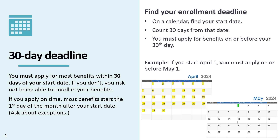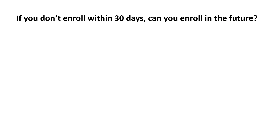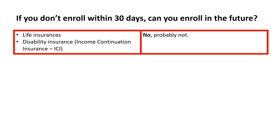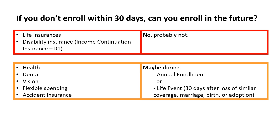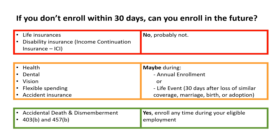For example, if you start April 1st, you must apply on or before May 1st. If you don't enroll within 30 days, can you enroll in the future? For life insurance, disability insurance, and income continuation or ICI — no, probably not. For health, dental, vision, flexible spending, and accident insurance, it may be possible during annual enrollment or a life event, such as 30 days after loss of similar coverage, marriage, birth, or adoption. For accidental death and dismemberment, 403B and 457B — yes, you can enroll anytime during your eligible employment.